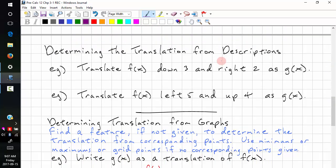Determining translation from descriptions. We want to be able to convert this into an equation. Translate down 3, this is k, and right 2, this is h, and that's equal to negative 3, and this is equal to 2, as g of x. So g of x equals f of x minus h plus k.